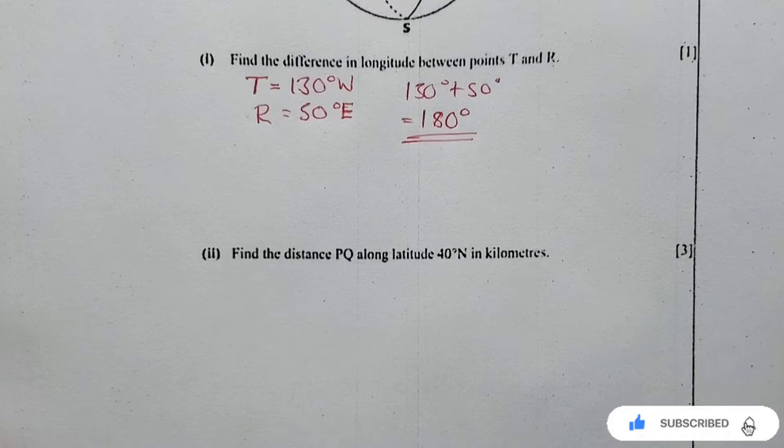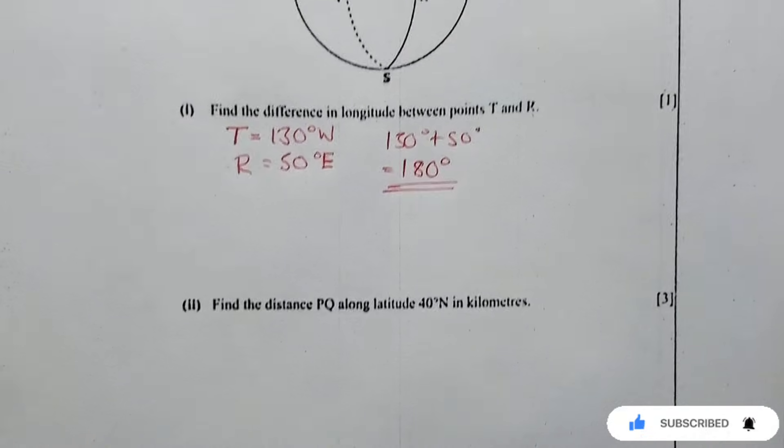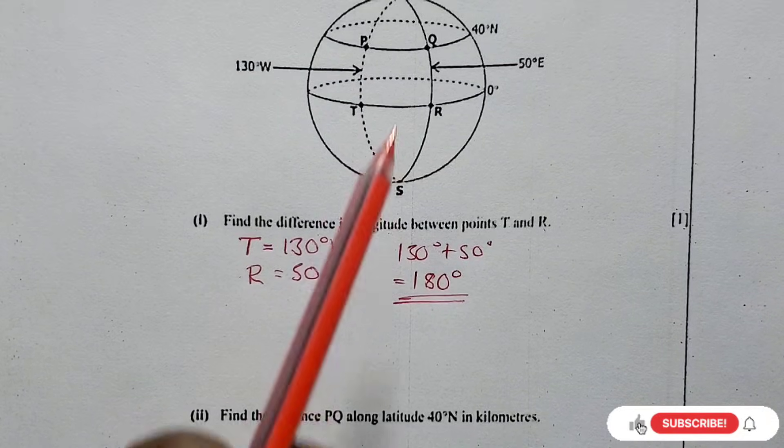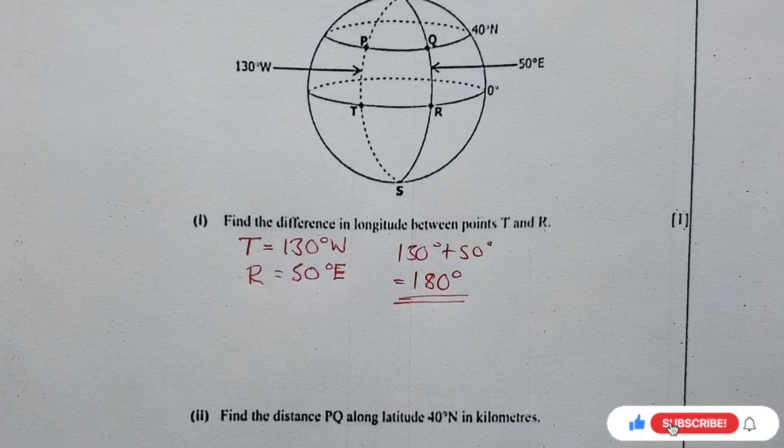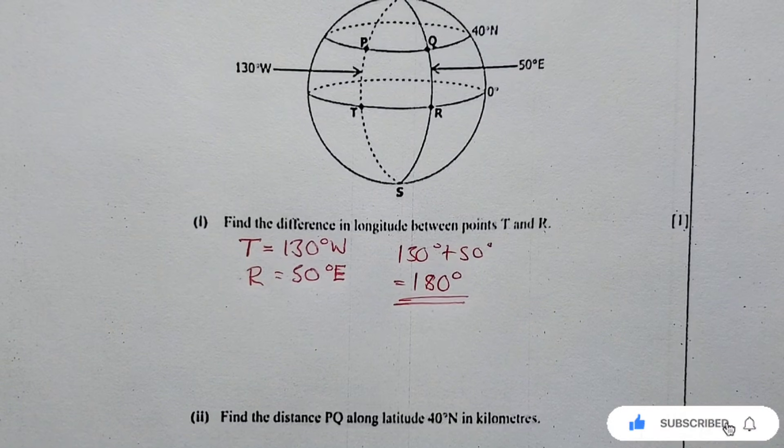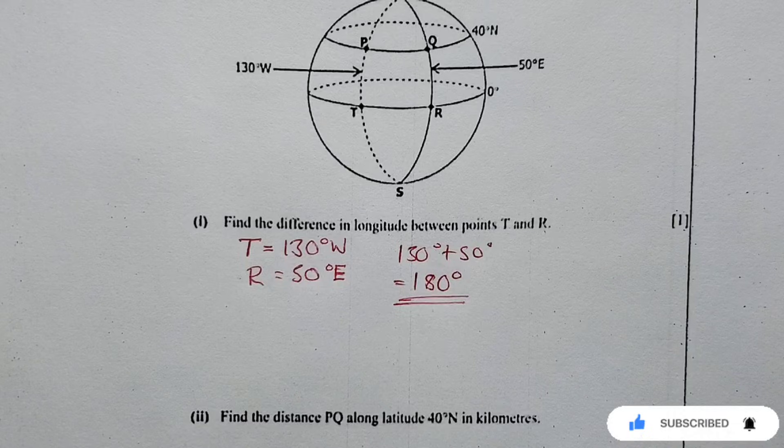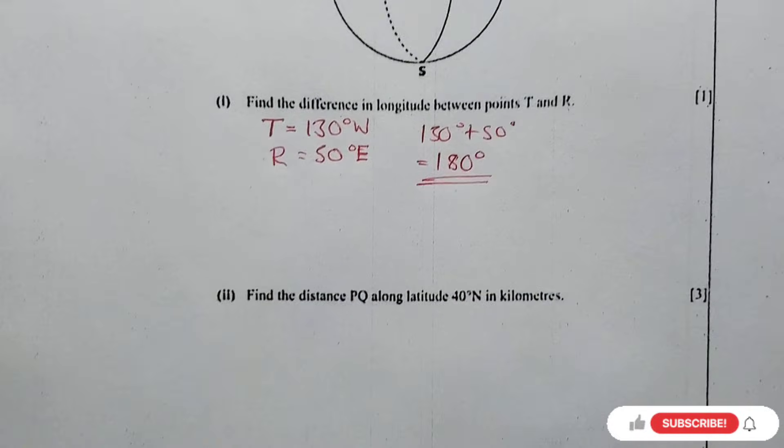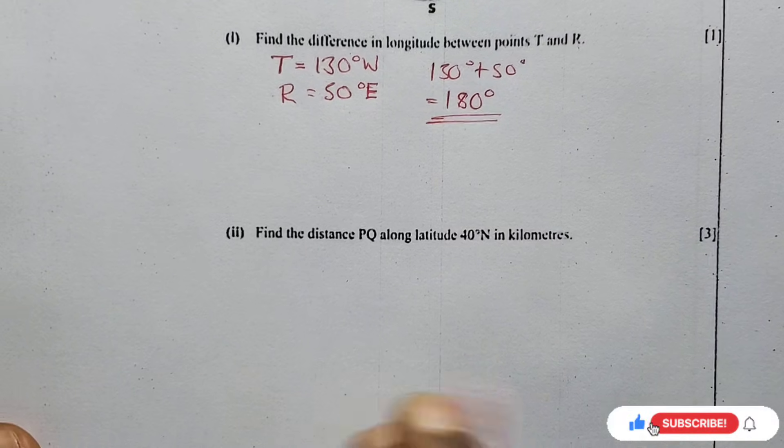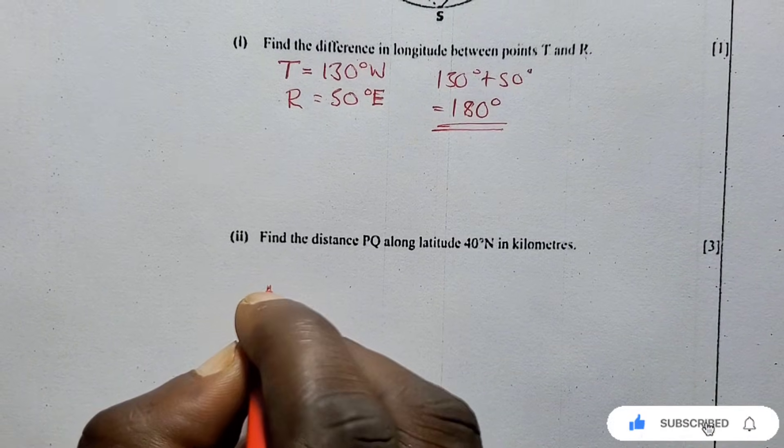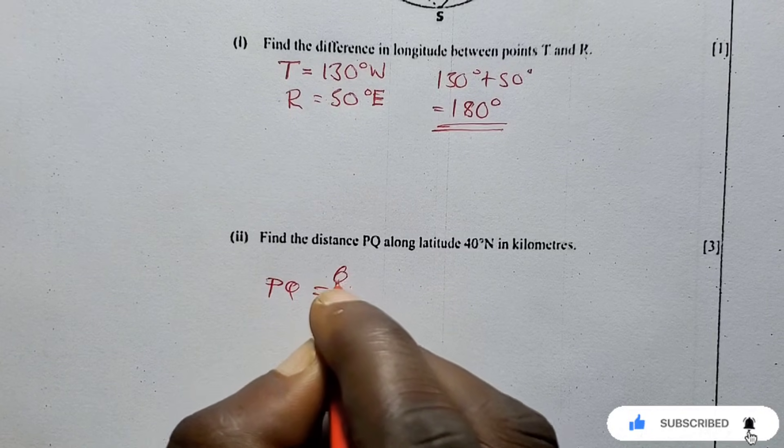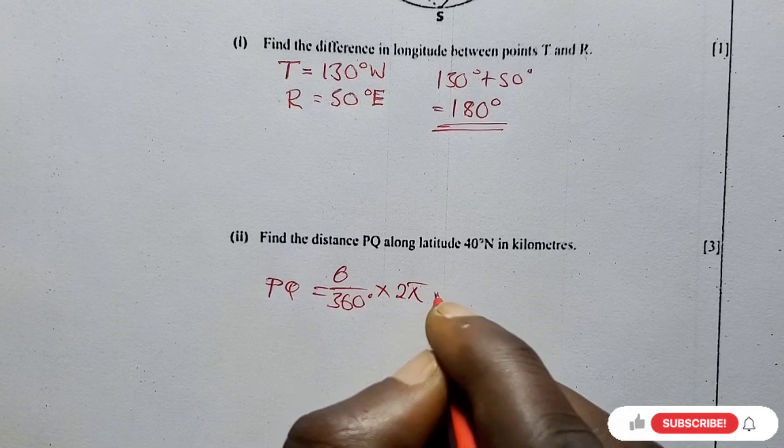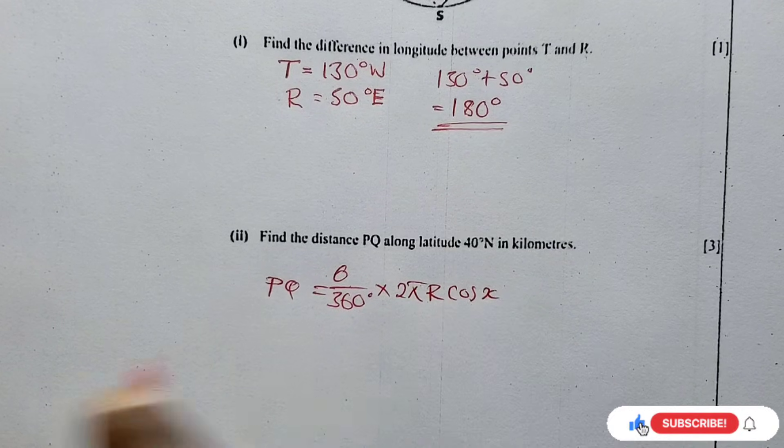Let's go to the next question. This is three marks. We are asked to find the distance PQ along latitude 40 degrees. Now this is distance in latitude, so distance in latitude we're going to say PQ is equal to theta over 360 degrees times 2πR cos x. We're going to add cos x to this one.